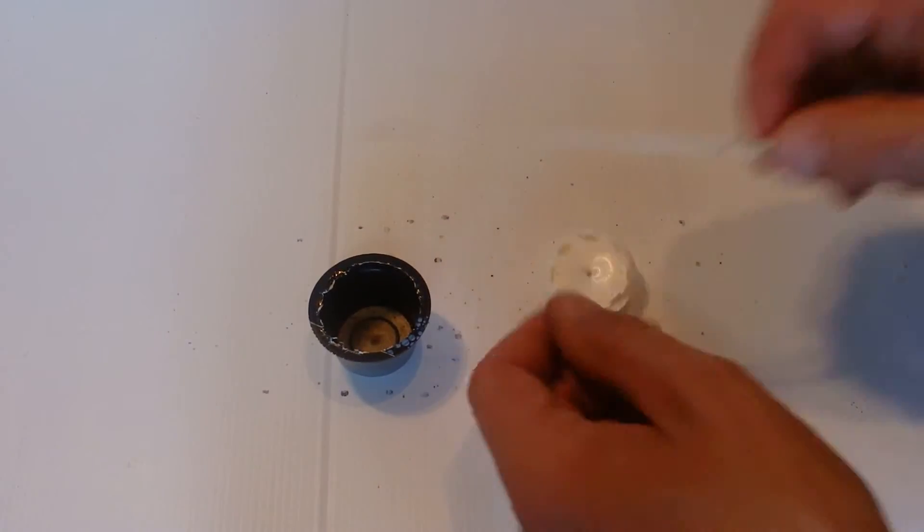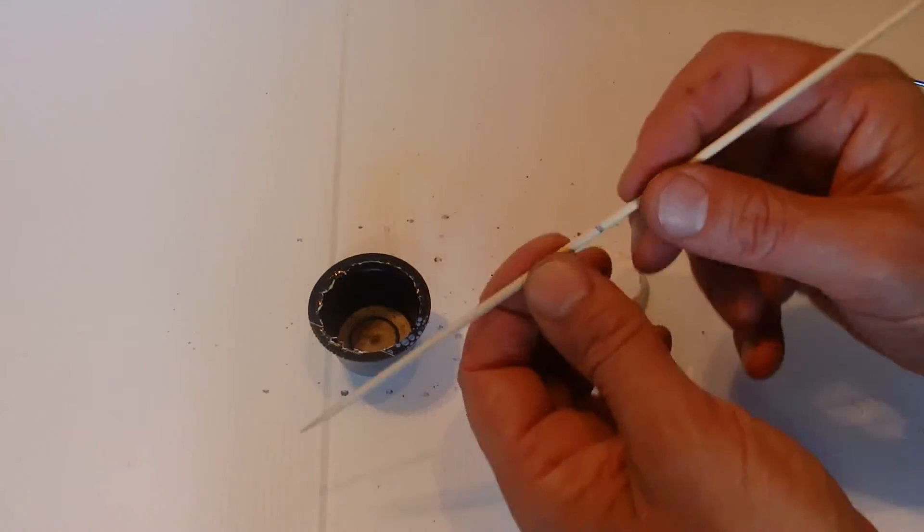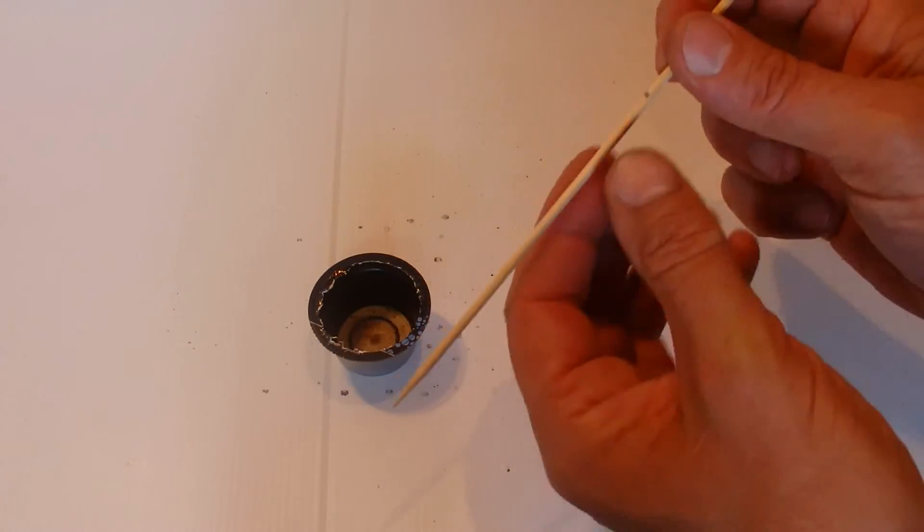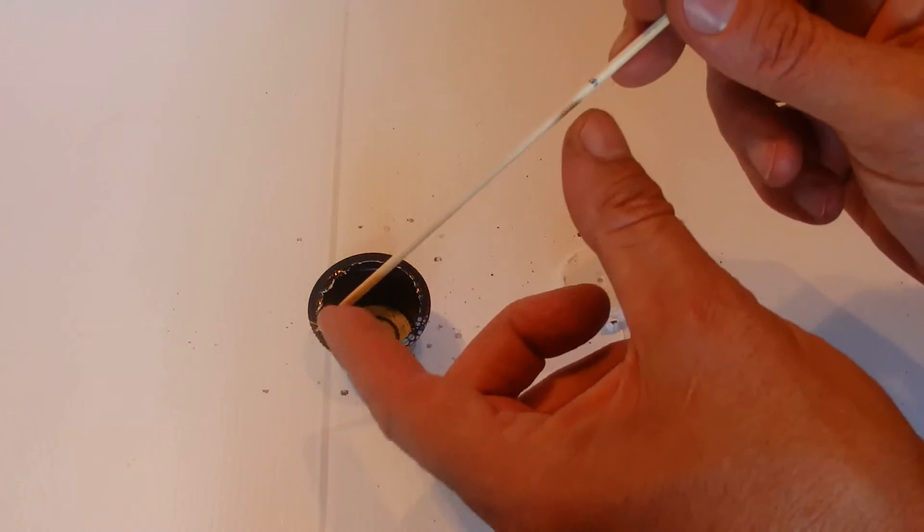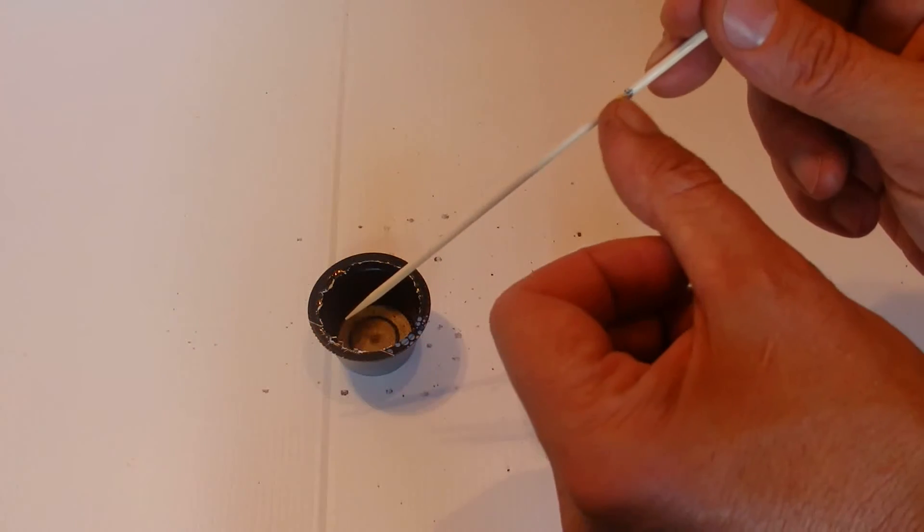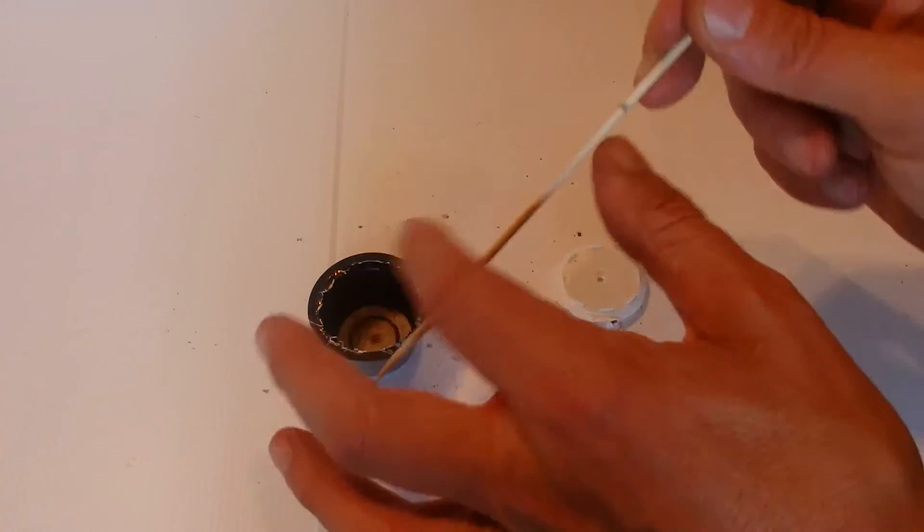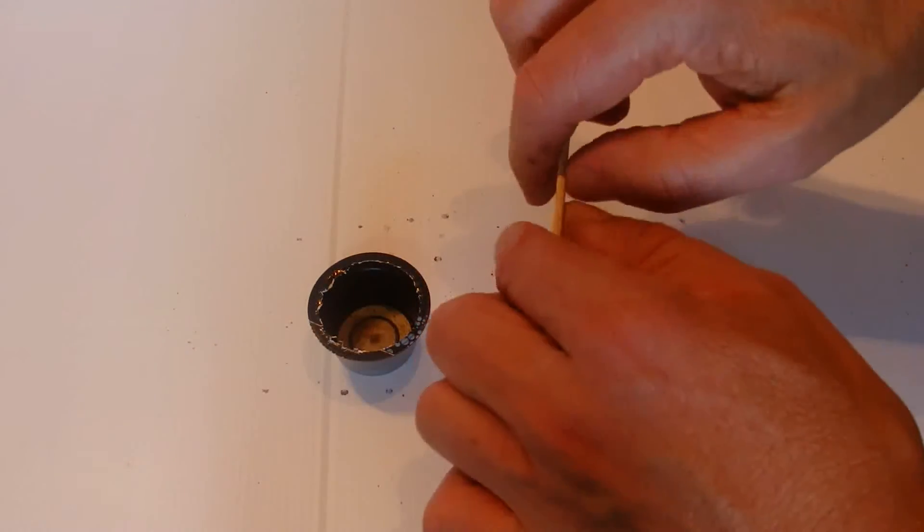Now we're going to get one of these wooden skewers that you use for your kebabs. We're going to measure from the pointy end up about 11 centimeters or four and a half inches and put a little mark there.